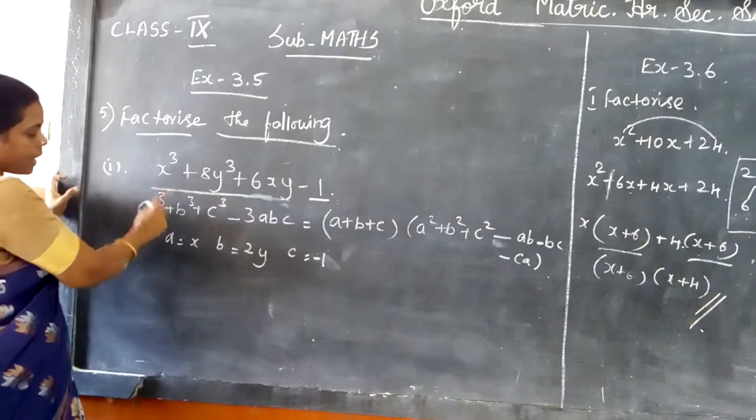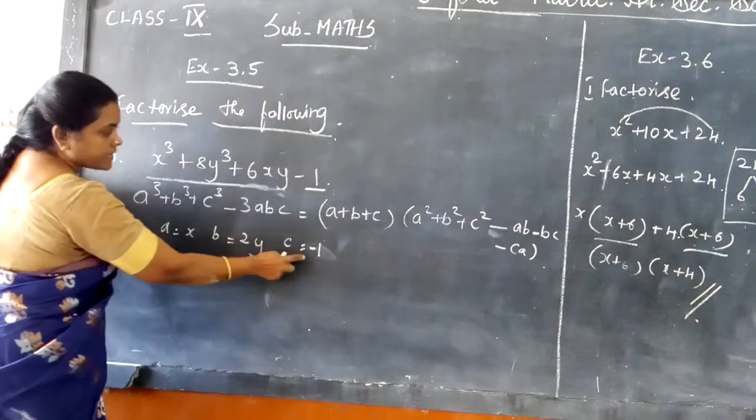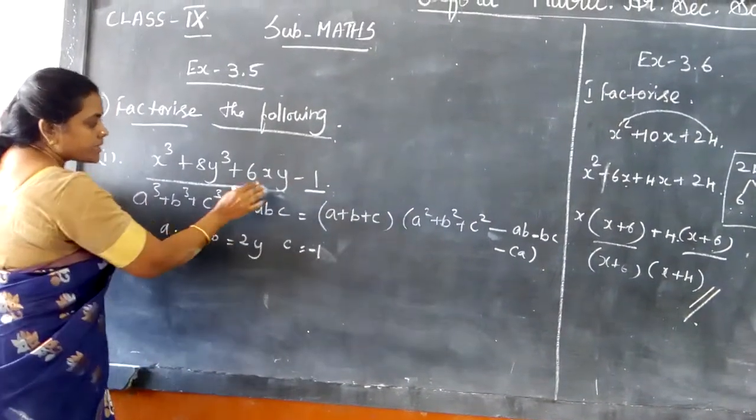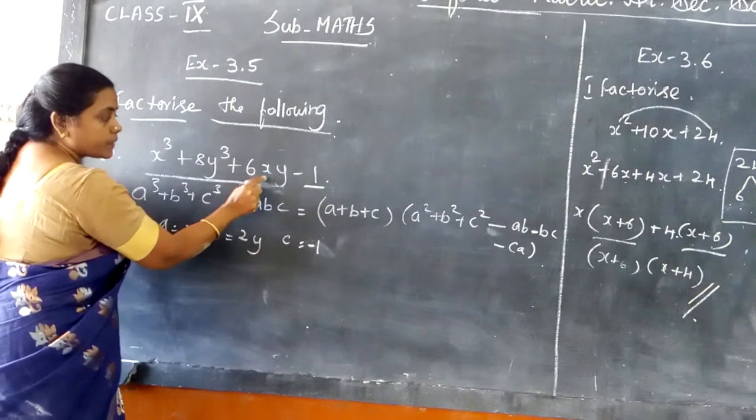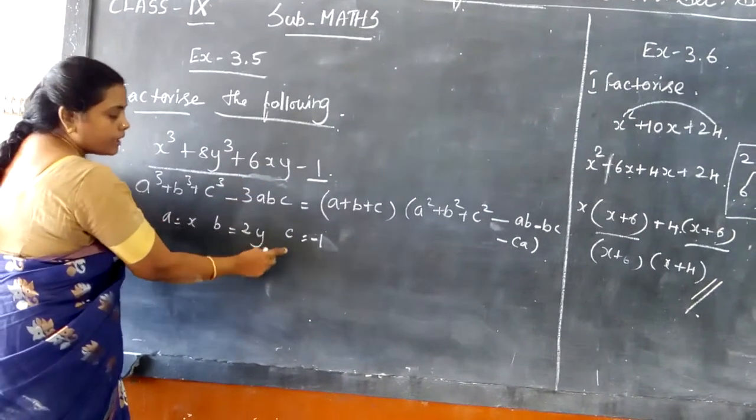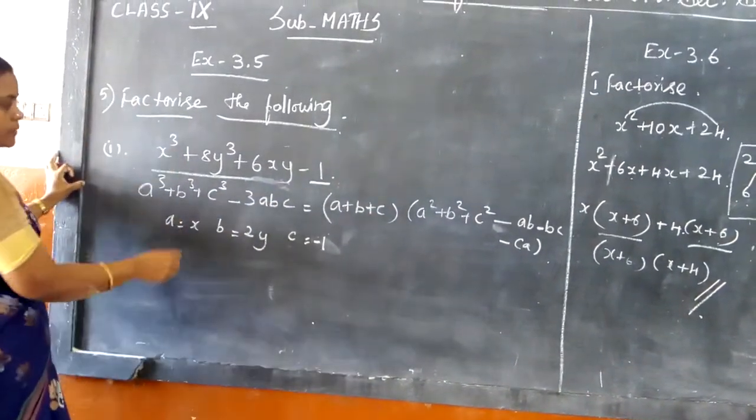Now what are the values of A, B, and C? A is x, B is 2y, and C is minus 1. Using this, we can write the right-hand side value.